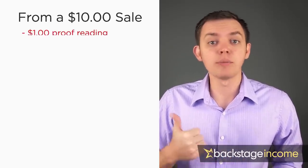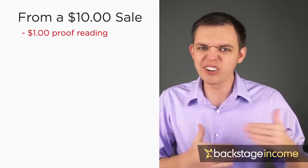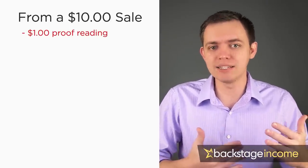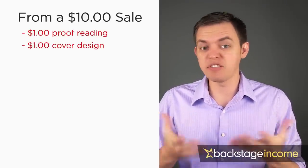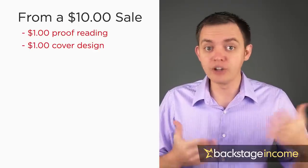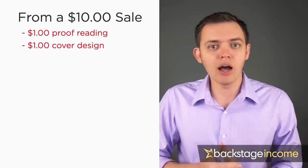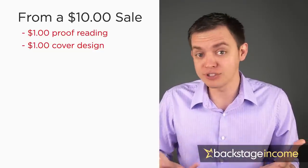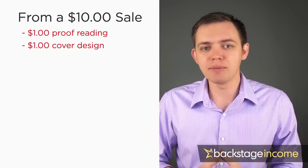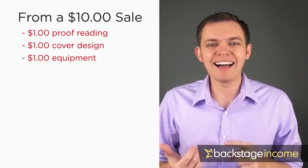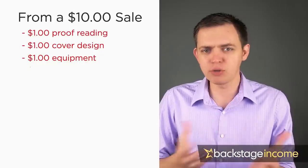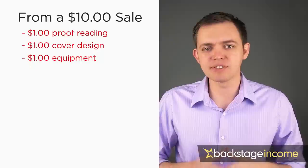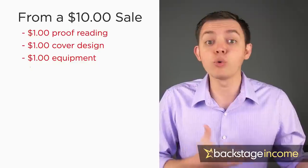Let's break this down on a step-by-step basis. One dollar from your $10 may go to proofing — having someone professionally proofread your book and make sure there are no grammar or spelling errors. Another dollar may go to designing the cover; if you're not a great designer, you may need to spend $1 of that $10 sale price on a professional graphic designer. Another dollar may go to equipment such as a laptop, a computer, speaking software, or writing software needed to create your book.